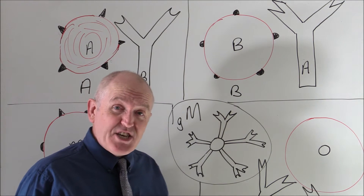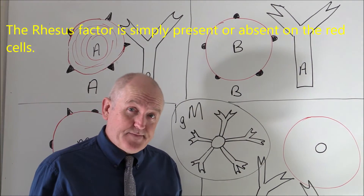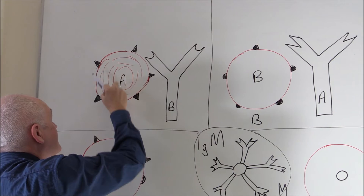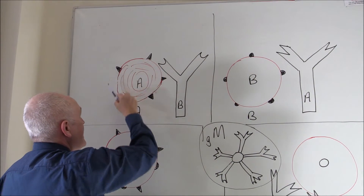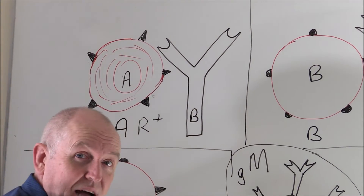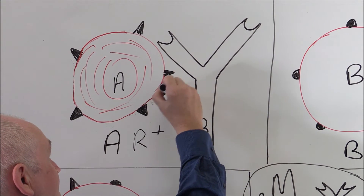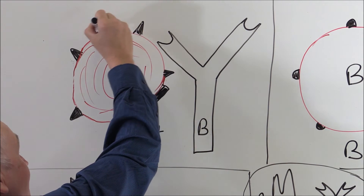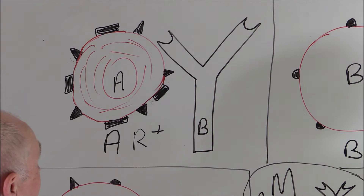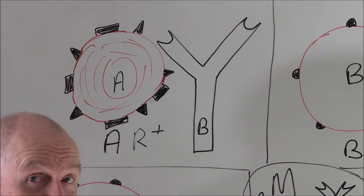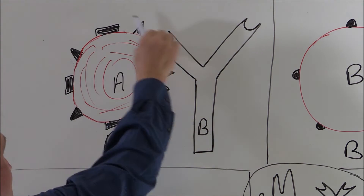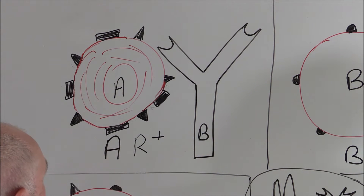Now, what the rhesus factor is — it is an additional blood group, and it's simply present or absent. So if someone's blood group A, as we see here, we notice that there are A antigens on the surface of the red cell, but no other antigens at the moment. But if someone is A rhesus positive, then they will have rhesus factor antigens on the surface of their cells as well. This is another antigen — it's protein based. So what we've done now is we've added rhesus factor antigens to someone who is blood group A, and we've turned them from rhesus negative into rhesus positive.